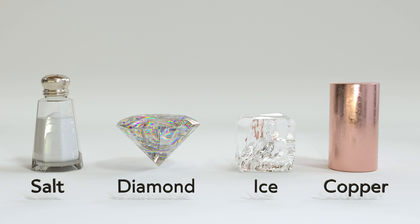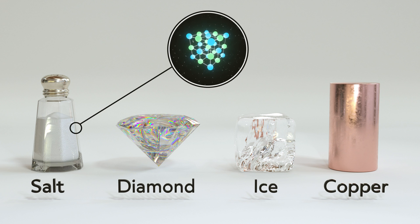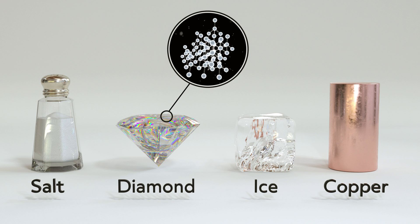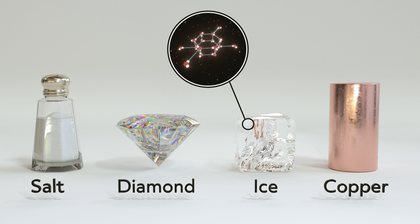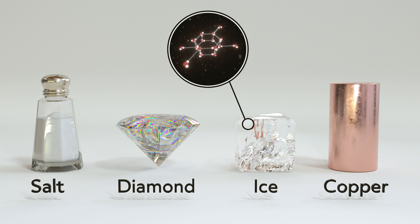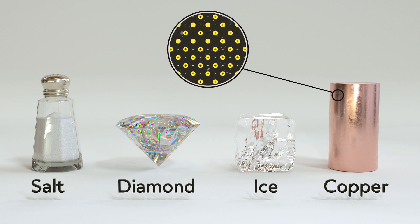There are four types of crystalline solids, all of which are held together by different forces. Ionic solids, like table salt, which is sodium chloride, are held together by electrostatic attractions. In covalent network solids, like graphite or diamonds, the atoms are connected through covalent bonds. Molecular solids, like ice, are held together by many intermolecular interactions. Metal solids, like copper, are held together by metallic bonds, or what is colloquially known as a sea of electrons.